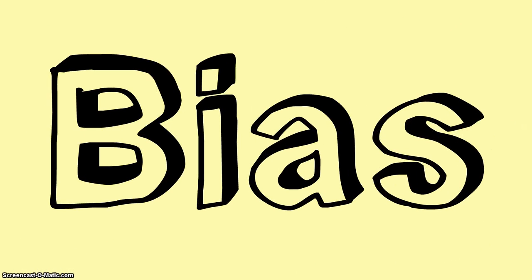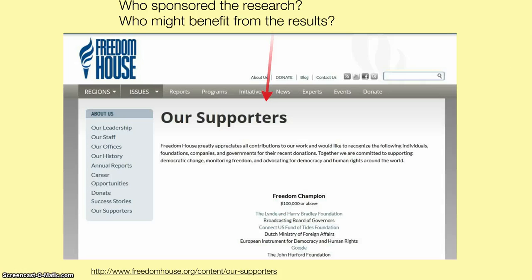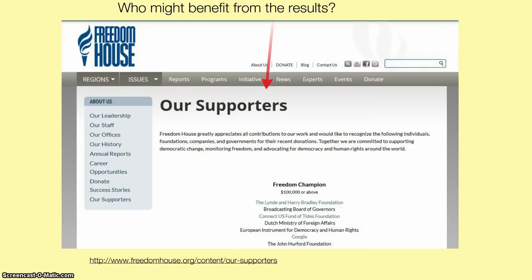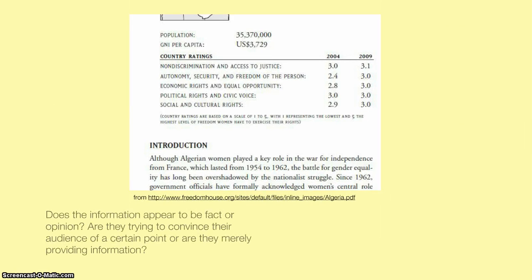The second aspect is looking for bias. When we're looking at a website, we want to ask ourselves: who sponsored the research? Is that up front and easy for us to find, and who might benefit from the results? We also want to consider does it appear to be fact or opinion — are they trying to convince us of something, or are they merely stating known facts? For educational purposes, we really want to focus on websites that give us fact over opinion.